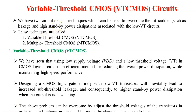Hello everyone. In this video we will see the variable threshold CMOS circuit and multiple threshold CMOS circuit, that is VTCMOS and MTCMOS. In the previous video we discussed about low power design using voltage scaling, which is nothing but reduction of supply voltage VDD. When we are reducing the supply voltage, the propagation delay increases, and that will be compensated by using the low threshold voltage circuit. Using this concept, we utilize two techniques: one is variable threshold CMOS, and another is multiple threshold CMOS.